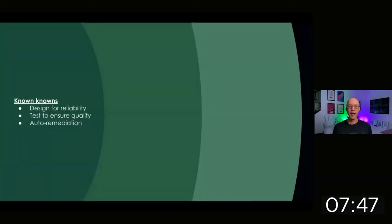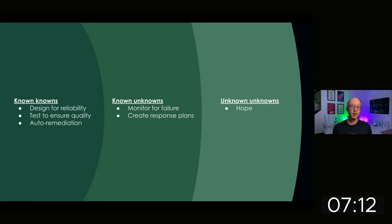When it comes to failure, we have known knowns—well understood ways that our applications can fail, and so we write tests to ensure quality and we build systems to automatically remediate them. We also have known unknowns. This is why we have monitoring tools that will alert us when our applications show signs of failure for reasons that we don't know beforehand. But we also have unknown unknowns, major disasters that haven't happened yet and that are beyond our conception of what's possible. And so we have no monitoring, no remediation tools. We just have hope.